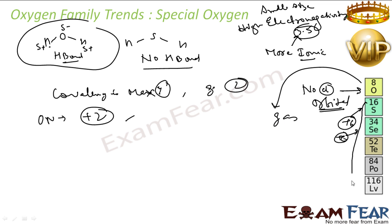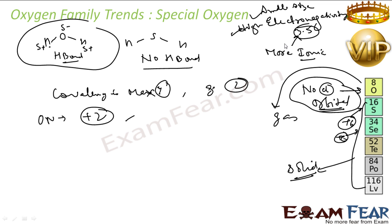Oxygen has different properties compared to other elements in this group because of three key characteristics: small size, high electronegativity, and no d-orbital. High electronegativity gives rise to hydrogen bonding and a degree of ionic character. Small size and absence of d-orbitals limit the covalency to a maximum of 4 and restrict the oxidation state.